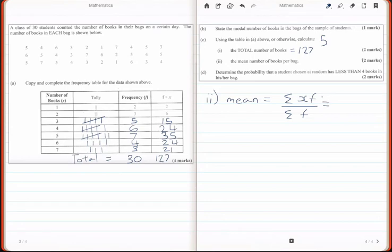127 divided by 30, which gives you exactly 4.23.